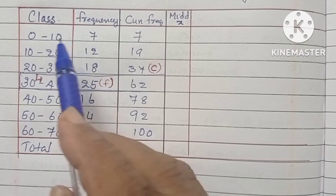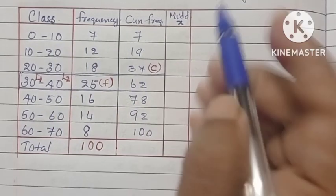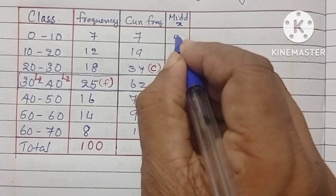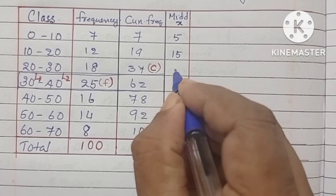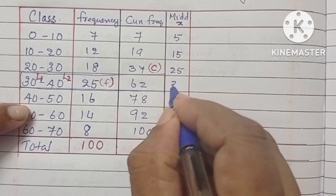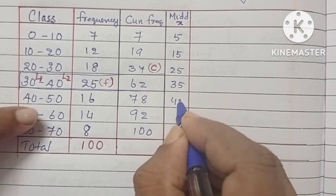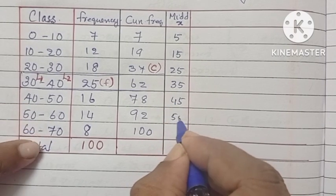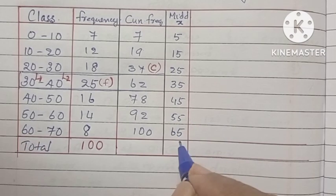Now to find the midpoints, we have to take from the class midpoint. 0 to 10, the mid value is 5. Therefore, we are writing 5. And 10 to 20, the mid value is 15. We are writing the mid value or X we are writing.